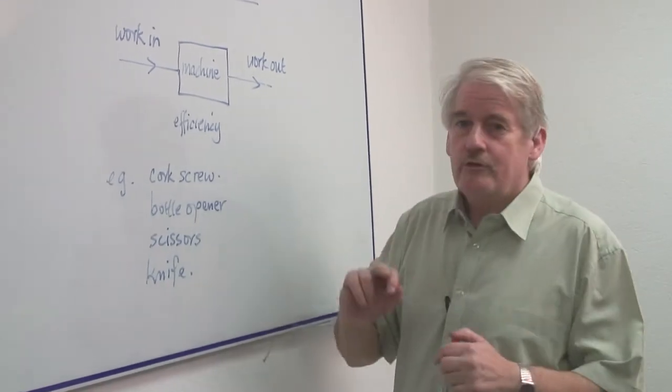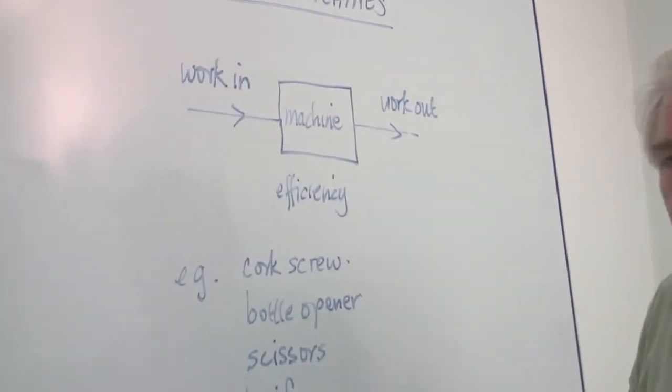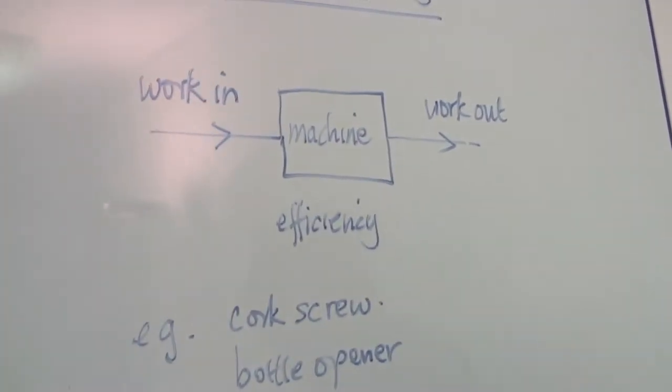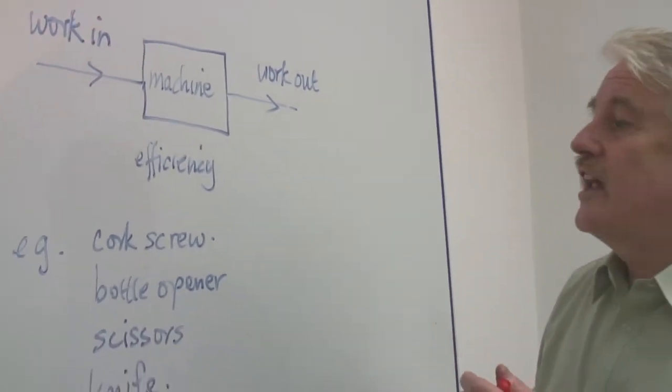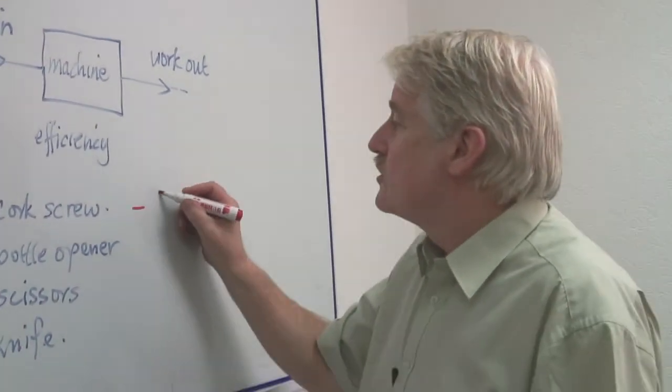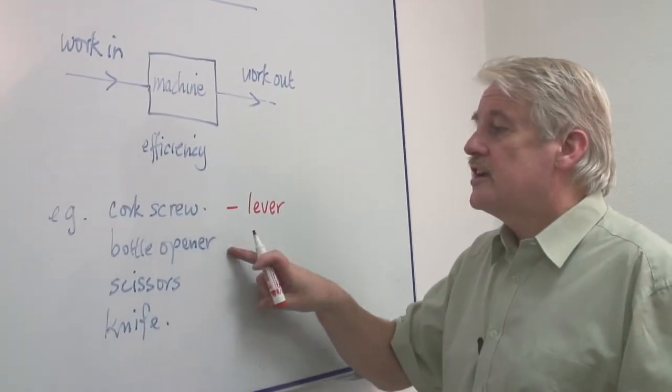So a corkscrew is just a device. It's a simple machine. And the way it works is you put a screw into the cork and then you use a lever system to remove the cork. So the corkscrew is just a lever.